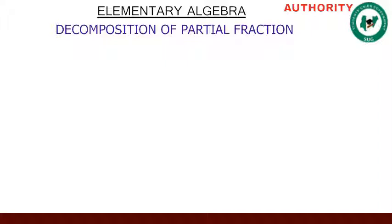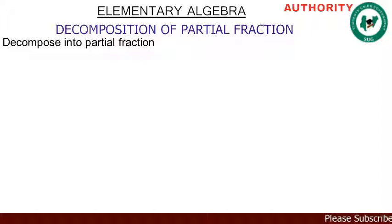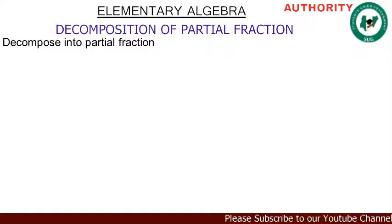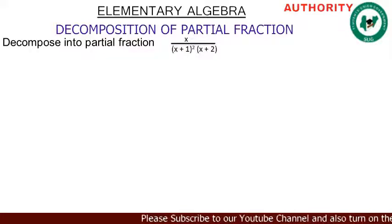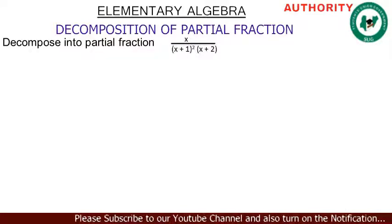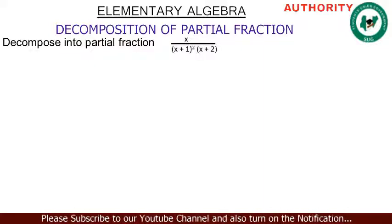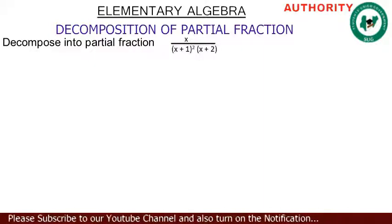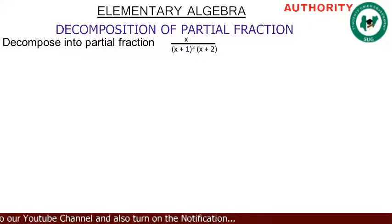Welcome again. We are talking about partial fractions, and today we want to decompose into partial fractions: x over (x+1) squared times (x+2). Decompose into partial fractions x over (x+1) squared times (x+2).